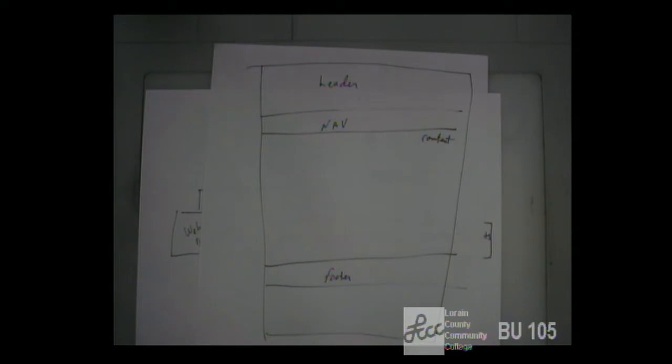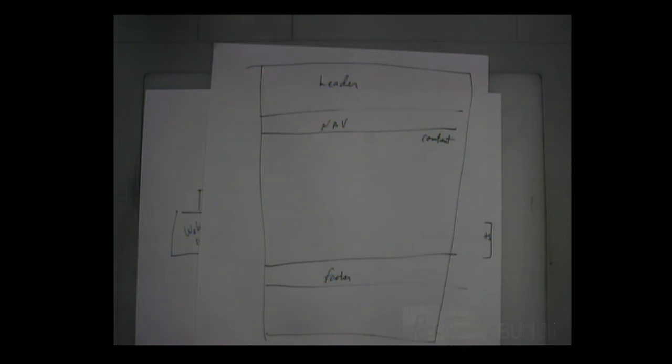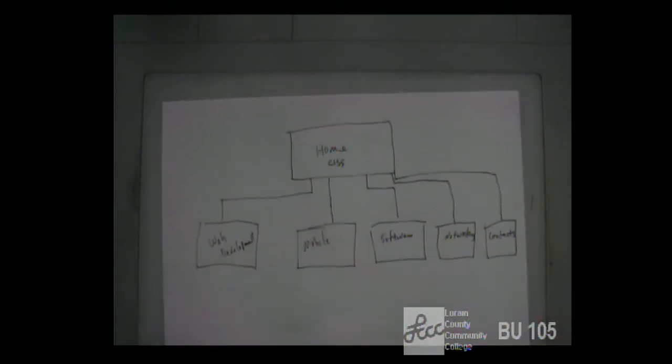A couple of variations — all of our pages about particular programs are going to have associate degrees, university partners, certificates, and then the footer. So we basically have one wireframe plus a couple pages that are going to have a little bit extra stuff. The wireframes for these four pages are going to have additional sections.